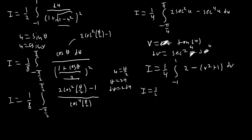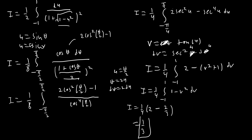We end up with one fourth times the integral from negative 1 to 1 of 1 minus v squared dv. Evaluating this integral gives one fourth times (2 minus two thirds), which is one fourth times four thirds, and that equals one third. So the final answer is one third.